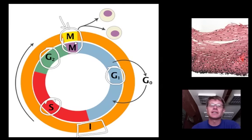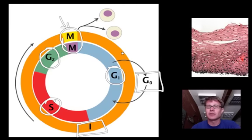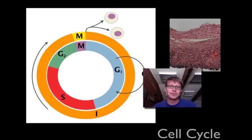If a cell never divides again, it will stall out in something called the G0 phase. Some cells inside our body — like cells of the central nervous system and muscle cells — never copy themselves during your whole lifetime. They're in the G0 phase, just waiting, and they're not going to make divisions.